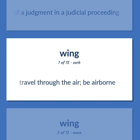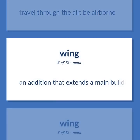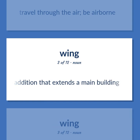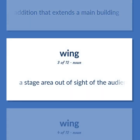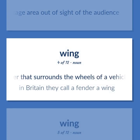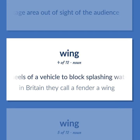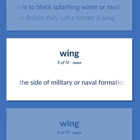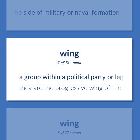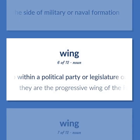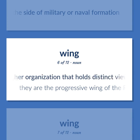Wing: Travel through the air; be airborne. An addition that extends a main building. A stage area out of sight of the audience. A barrier that surrounds the wheels of a vehicle to block splashing water or mud. Example: In Britain they call a fender a wing. The side of a military or naval formation. A group within a political party or legislature or other organization that holds distinct views or has a particular function. Example: They are the progressive wing of the Republican Party.